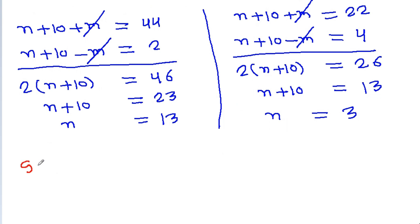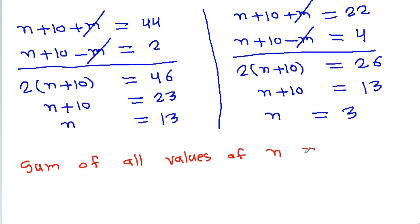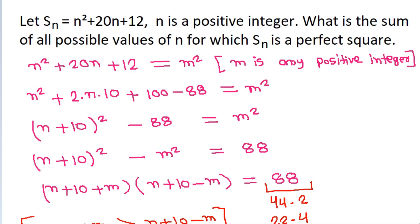So the sum of all values of n equals 13 plus 3, which is 16.